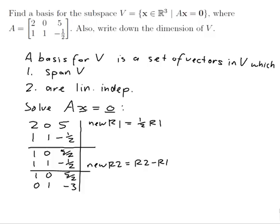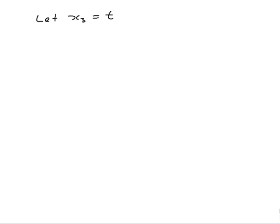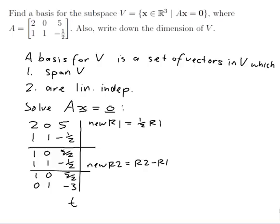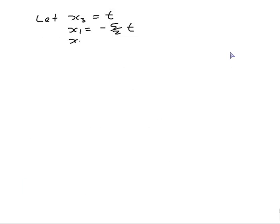So if we go back here, this one is t. Let's have a look. This first one tells me x₁ plus 5 on 2 t is equal to 0. So x₁ is equal to minus 5 on 2 t. And what about x₂? So x₂ minus 3t is equal to 0. So x₂ is 3t.